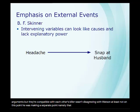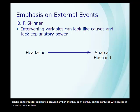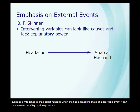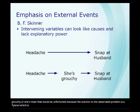Skinner's point was that unobserved phenomena or intervening variables can be dangerous for scientists because, number one, they can be confused with causes of behavior, and number two, they don't actually have any explanatory power. For example, suppose a wife tends to snap at her husband when she has a headache — an observable event measurable by sinus pressure. The husband might infer an intervening variable like 'she's grouchy' or 'she's mean.' That would be unfortunate because the solution to the observable problem is a Tylenol, which is probably much easier than the solution to the intervening variable problem, which might be a divorce.